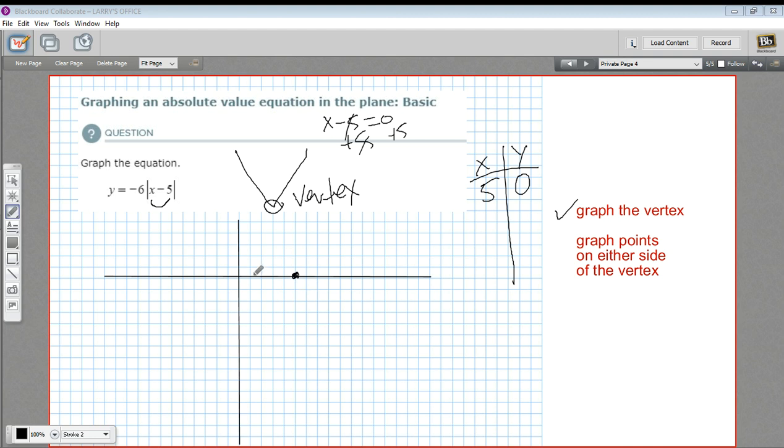Now we want to choose points on either side of the vertex. We're going to have pairs of points, and those pairs are going to end up having the same y values. So I think first I'm going to look one point to the right and one point to the left of our vertex. So that would be the points 4 and 6.